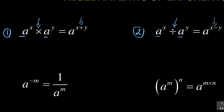In a multiplication sign, you can see the plus sign — if you twist it, you can see a positive sign. And in a division sign, you can see that there is a negative sign. So those are the first two laws.